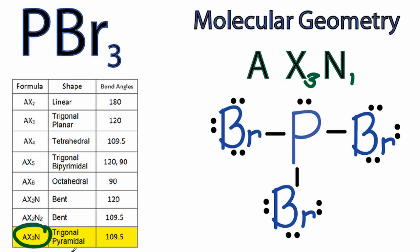That tells us we have a trigonal pyramidal or pyramidal molecular geometry and that the angles are going to be about 109.5. They won't be exactly 109.5, but it gives us a general guide. If we look at that molecular shape in three dimensions,